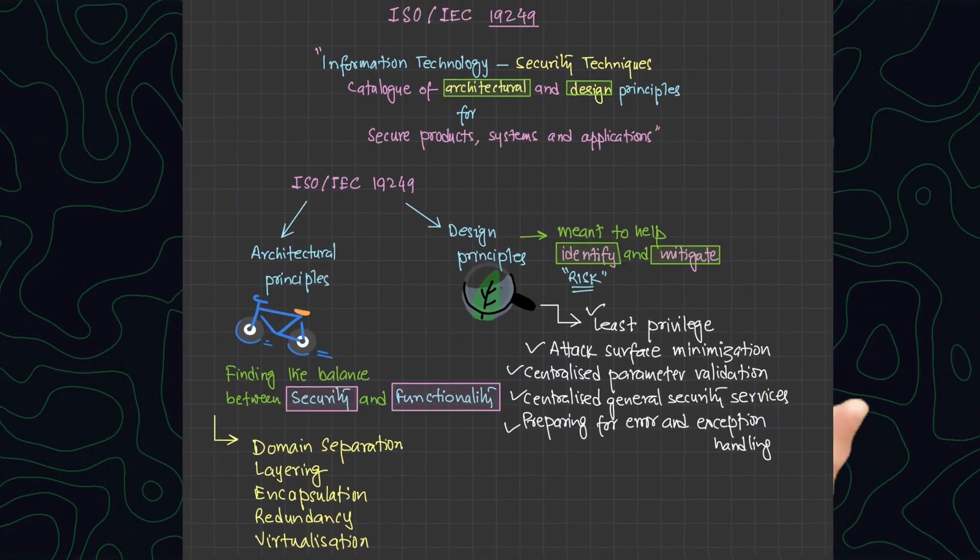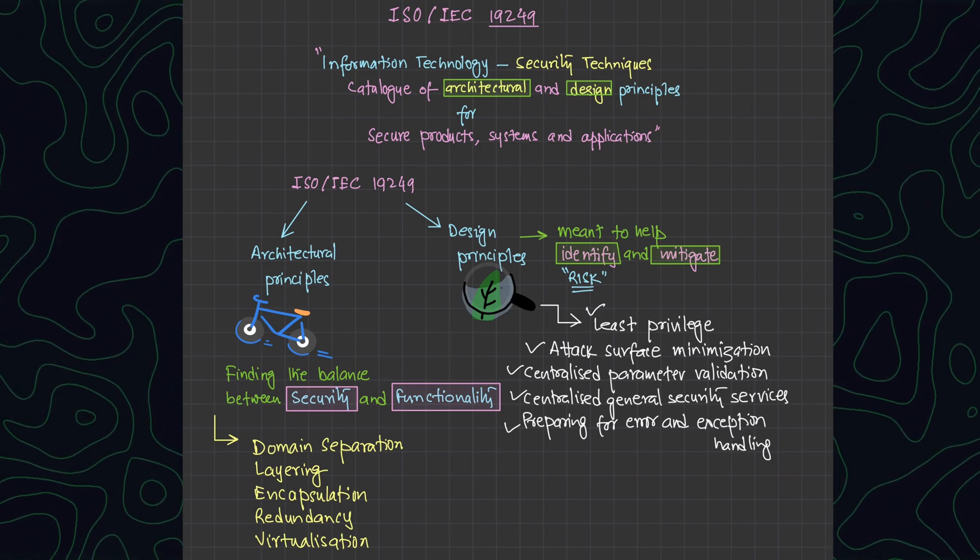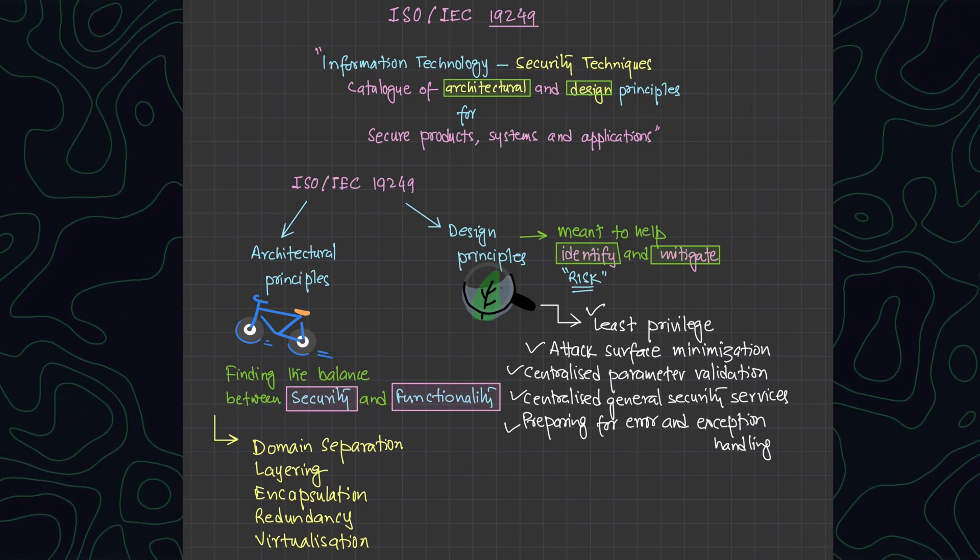These are the two broad categories — architectural principles and design principles — in ISO IEC 19249. In the next video, we will start dissecting individual architectural principles and individual design principles, and I will try to show how this relates to a secure product, application, or system.